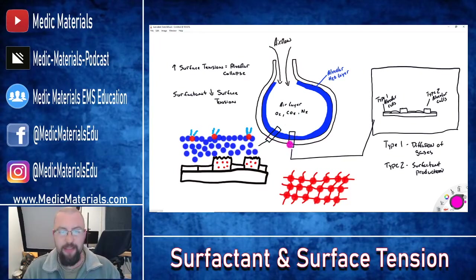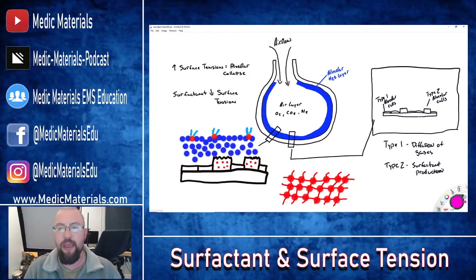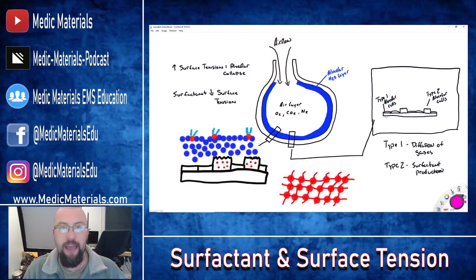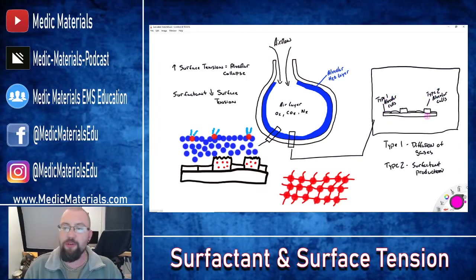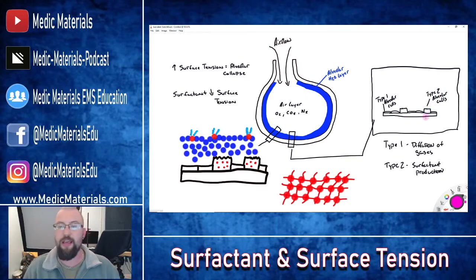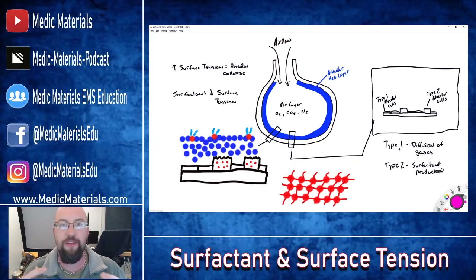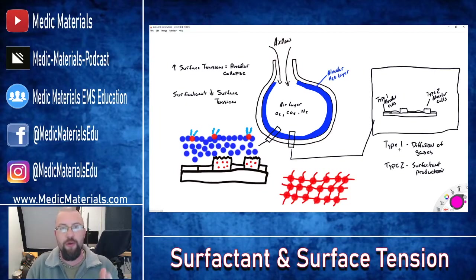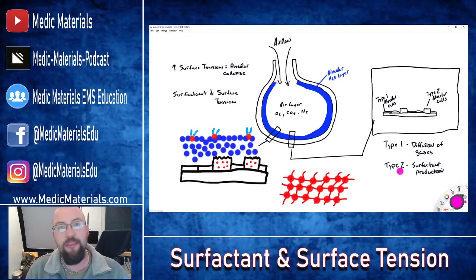In the walls of the alveoli, there are two types of alveolar cells. Type 1 are flat epithelial-looking cells — there are more of them and they are the diffusion cells, where gas diffusion occurs across the capillary beds. Type 2 are cuboid or cube-shaped epithelial cells, and this is where the surfactant is going to be produced.